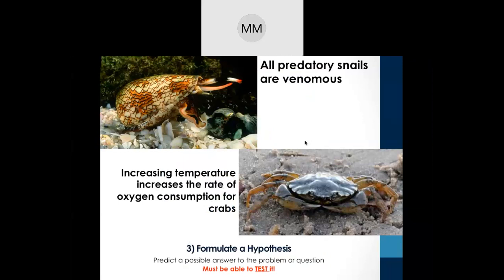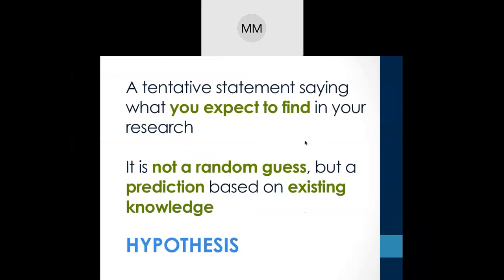A hypothesis is a prediction of a possible answer to the problem or question — a tentative statement saying what you expect to find in your research. If you want to get ideas for your final year project, check out your seniors' final year proposals. One mistake students often make is being too vague — for example, saying 'there is a lot of fish diversity in Pulau Bidong.' If someone asks what you expected to find, you'd say 'a lot of fish,' but that's self-explanatory. You need to give more detailed answers based on your observations and literature review.